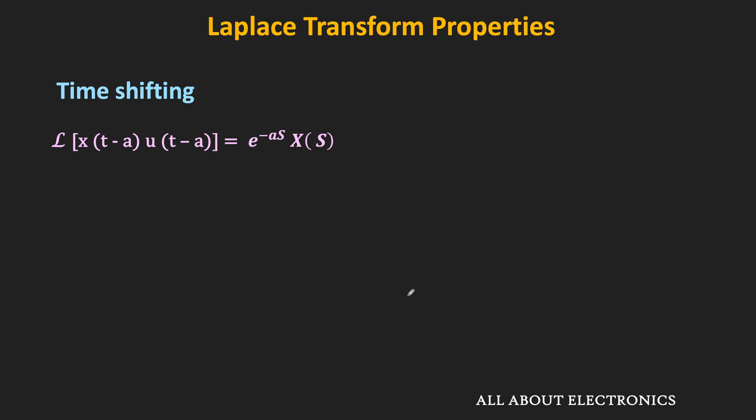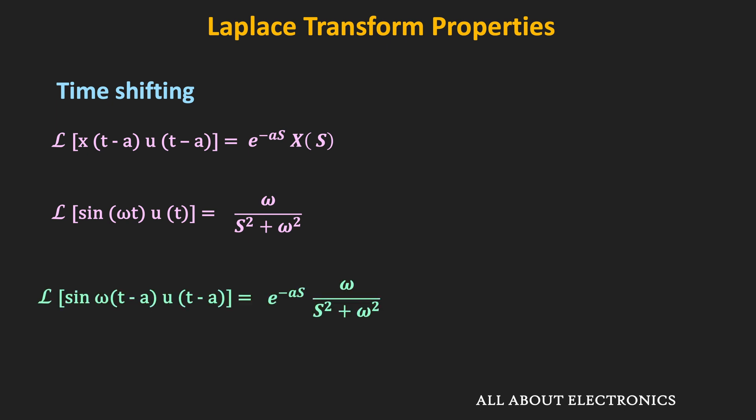For example, the Laplace transform of sin(ωt)·u(t) is ω/(s² + ω²). Using the time shifting property, the Laplace transform of sin(ω(t-a))·u(t-a) equals e^(-as) times ω/(s² + ω²). That is the time shifting property of the Laplace transform.